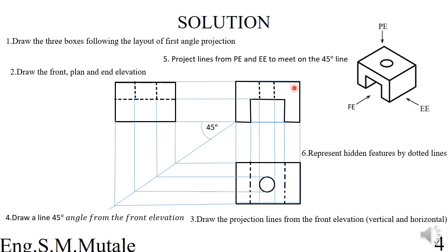In the final views: the front elevation shows the object with dotted lines for the hidden hole. The end elevation shows the outline with dotted lines for the hidden hole and hidden edges. The plan view shows the box with a hole on top, plus dotted lines for hidden internal lines. This completes the first angle projection. The next example will cover the same question in third angle projection.